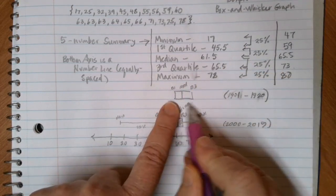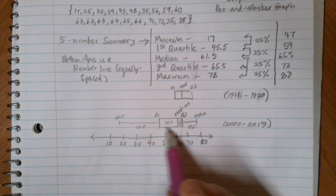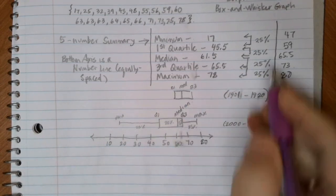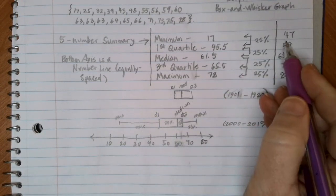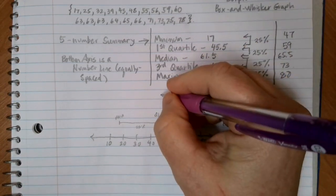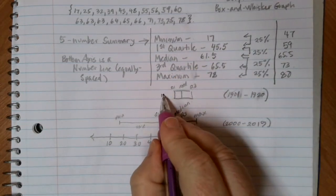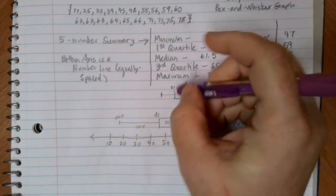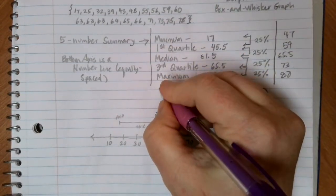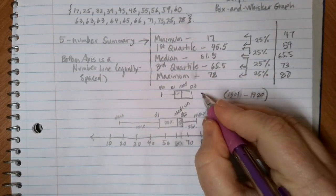Notice that that middle 50% is pretty together there, right? We've got all of that stuff pretty close, similar to what we had here. Then we're going to have our whiskers extend out to our lowest number, which was at 47, which was here. And then my upper whisker is going to go from the Q3 box up to my maximum, which in this case was 80.